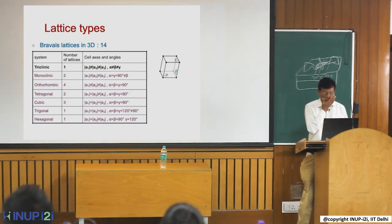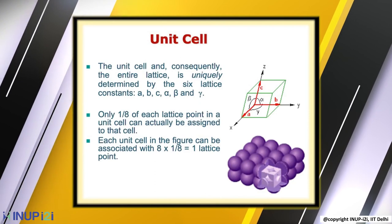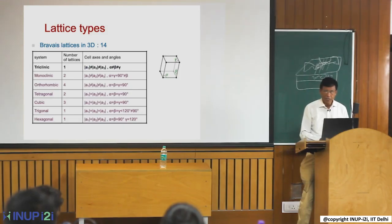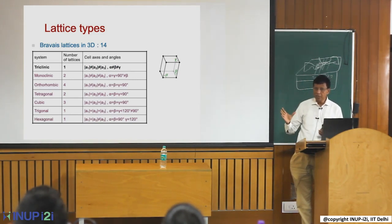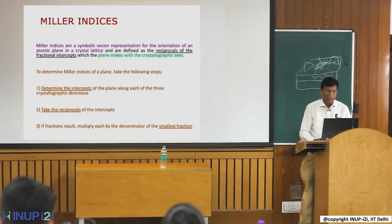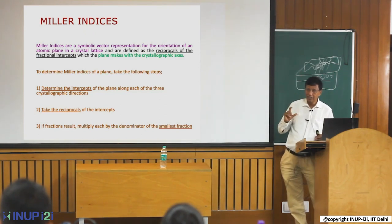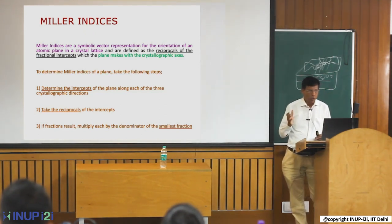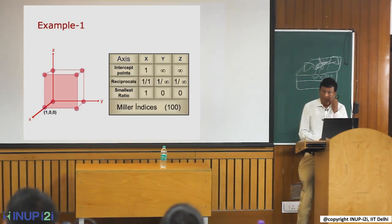Whenever you see an X-ray diffraction peak, there are three numbers written — HKL — known as Miller indices. You need knowledge of Miller indices because they are essentially a reciprocal lattice concept. For example, a plane cutting the X-axis at 1 and parallel to Y and Z gives intercepts of 1, infinity, infinity. Taking the reciprocals gives Miller indices of 1, 0, 0. I will share these slides so you can go through them in more detail.